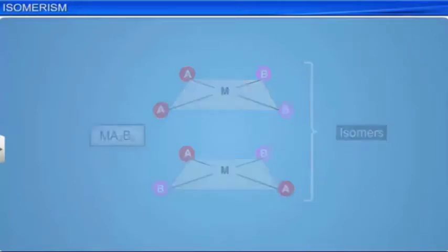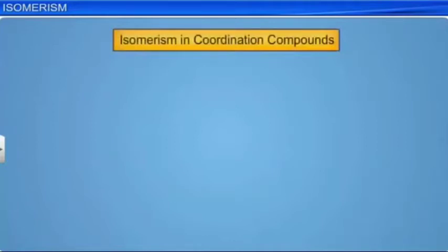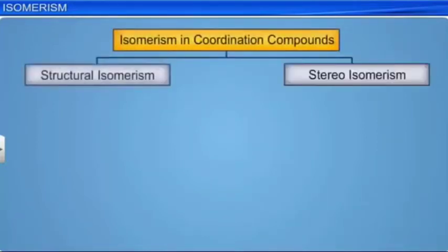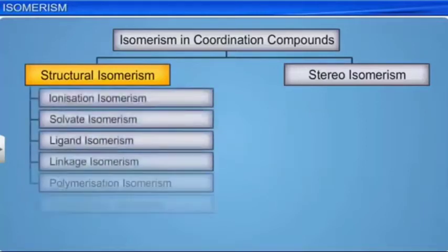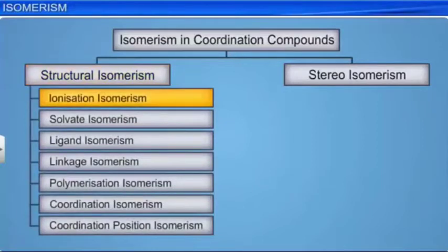Isomerism in coordination compounds may be broadly divided into two types: structural isomerism and stereoisomerism. Structural isomerism arises due to the presence of different kinds of bonds between the metal and the ligands. This can be further subdivided into several types, like ionization isomerism, solvate isomerism, ligand isomerism, linkage isomerism, polymerization isomerism, coordination isomerism, and coordination position isomerism.